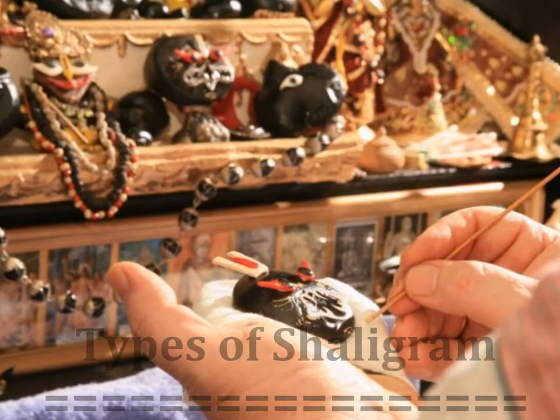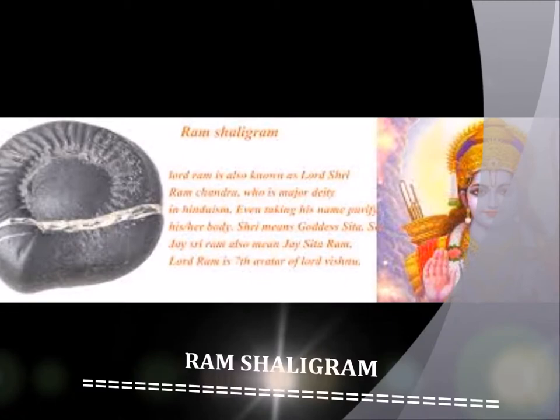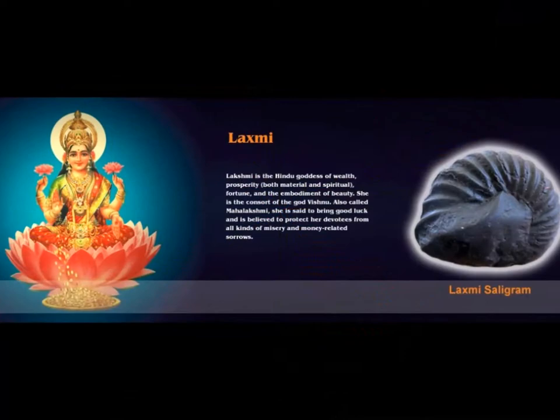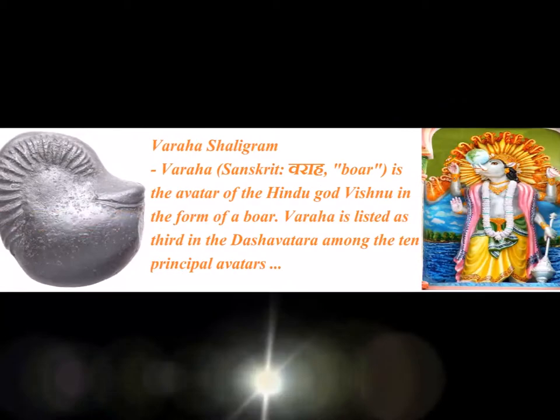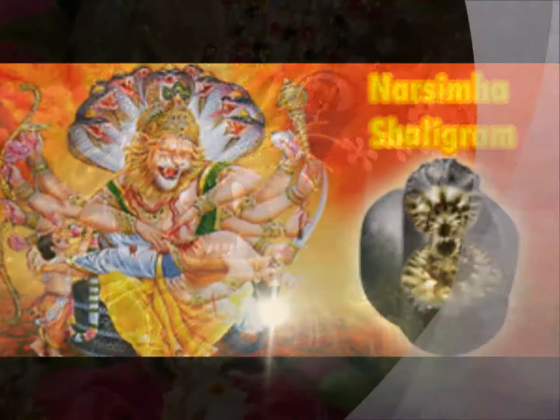Now I will tell you the types of Saligram. There are many types but I have mentioned only a few: first is Kalpa Vriksha Saligram, second is Ram Saligram, third is Vishnu Saligram, fourth is Lakshmi Saligram, fifth is Lakshmi Narayan Saligram, sixth is Varaha Saligram, seventh is Shiva Saligram, and eighth is Narasimha Saligram. You can find various Saligrams in ISKCON temples. All features of Saligram are mentioned in the Skanda Purana, and research has been done to identify which Saligram represents which deity.